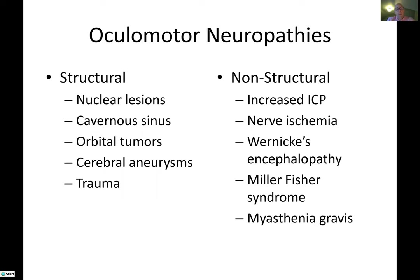Moving to ocular motor neuropathies — not just neuropathies of the third cranial nerve, but the third, fourth, and sixth cranial nerves that move our eyes. We generally break these down into structural versus non-structural lesions. Structural lesions can occur anywhere along the course of the nerve, from nuclear lesions in the brainstem — the midbrain for CN3 and CN4, the pons for CN6 — all the way out through cavernous sinus lesions, orbital tumors, cerebral aneurysms, and trauma. One of the most common results of head trauma would be a fourth cranial nerve palsy, a trochlear nerve palsy, where patients develop diplopia and a compensatory head tilt.